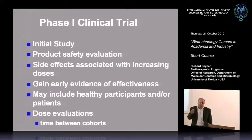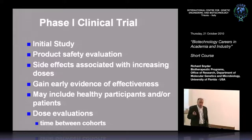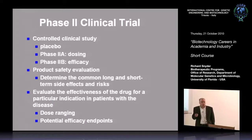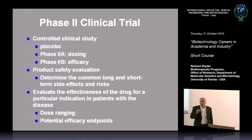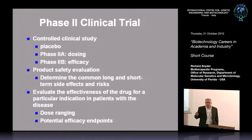A Phase One clinical trial is the initial study looking at safety evaluation. You're trying to determine what side effects are associated with increasing doses and looking for evidence of effectiveness in humans. Those trials may include healthy patients and are really doing dose scouting — dose-ranging studies. In a Phase Two trial, this is a controlled clinical trial usually involving a placebo. Phase Two-A is looking at dosing; Phase Two-B looks at efficacy endpoints. Safety is a major aspect: what is the minimum effective dose, maximum tolerated dose, and any short-term side effects.